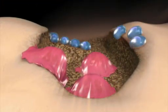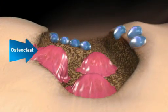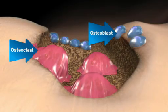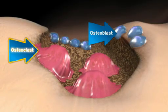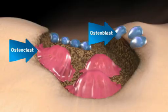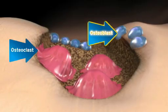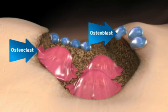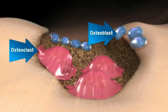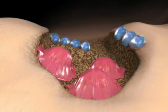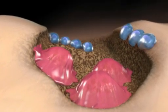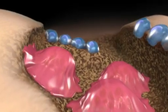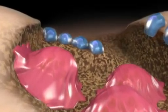Bone loss following menopause results from an imbalance of osteoclast and osteoblast activity. Osteoclasts are the specialized cells that resorb bone, and osteoblasts are the cells that form new bone. The discovery of the RANK ligand pathway has been an important advance in our understanding of bone remodeling.